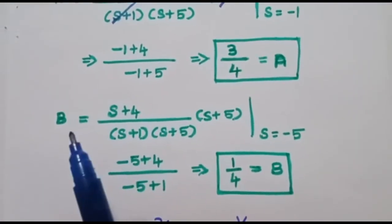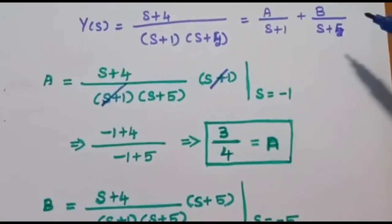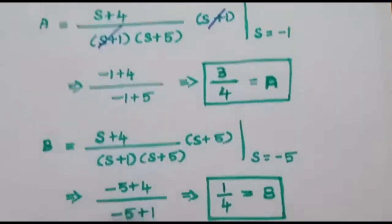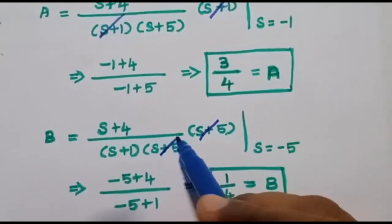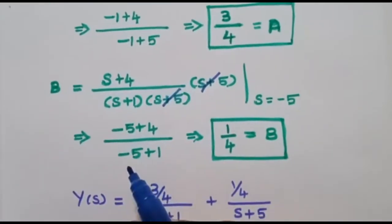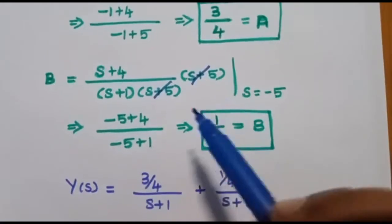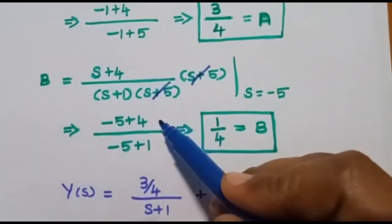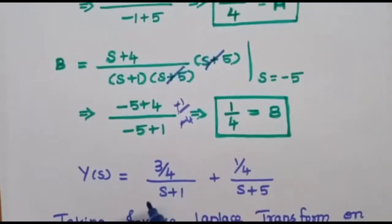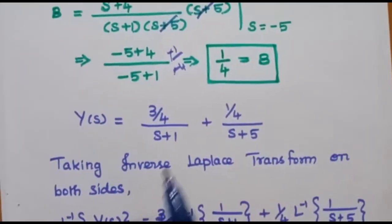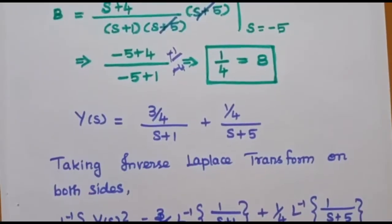Likewise, to find B, we take s plus 4 divided by s plus 1 times s plus 5, multiply by s plus 5, and set s equal to minus 5. After cancellation and substitution we get minus 5 plus 4 divided by minus 5 plus 1, which is minus 1 divided by minus 4. The two negatives cancel, giving B equal to 1 by 4. Substituting these values, Y of s is equal to 3 by 4 over s plus 1 plus 1 by 4 over s plus 5.